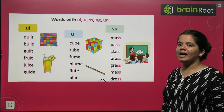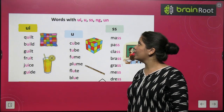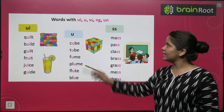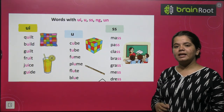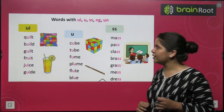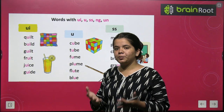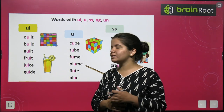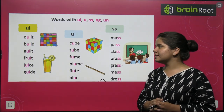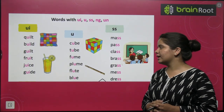Now we have words with UI, U, SS, NG, and UN sounds. First, UI words: quilt — meaning blanket — build, guilt, fruit, juice, guide.